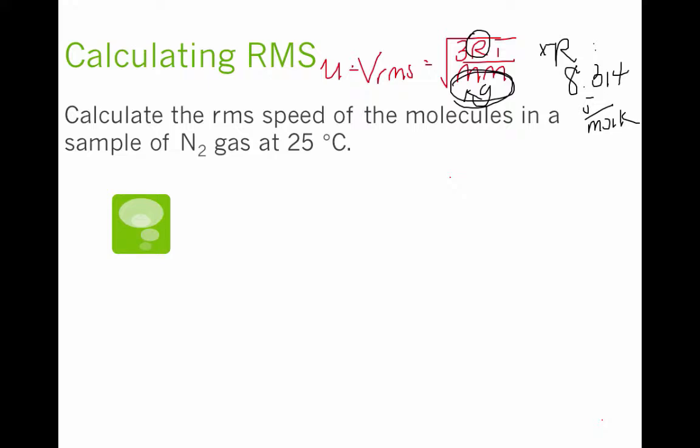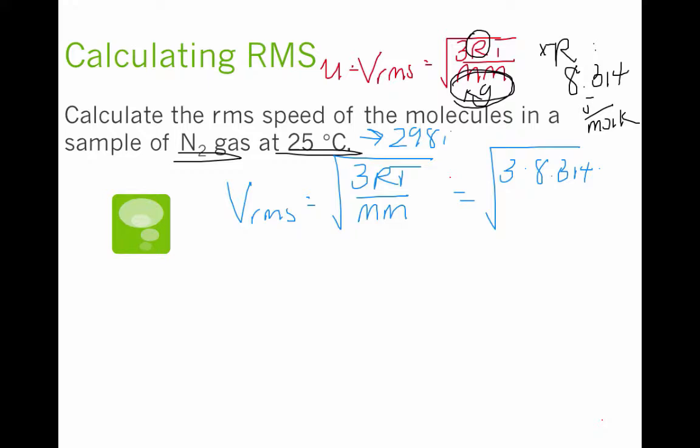Let's calculate the root mean squared speed of the molecules in a sample of N2 gas at 25 degrees Celsius. My V RMS is equal to the square root of 3RT over my molar mass in kilograms. So what I want you to do is see if you can set this problem up putting in your R, be careful with your T, check your units, and putting in your molar mass in kilograms. We get 3 times 8.314 times 25 degrees Celsius is 298 Kelvin. Don't forget to convert Celsius to Kelvin. All divided by...